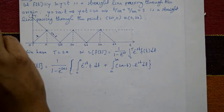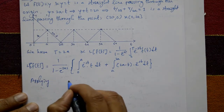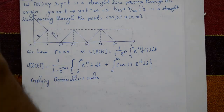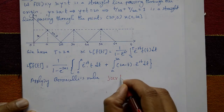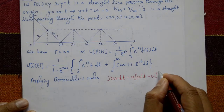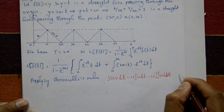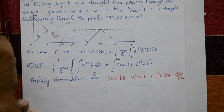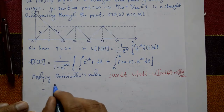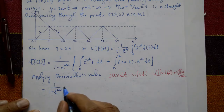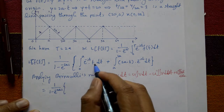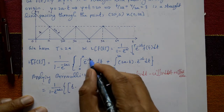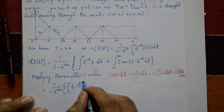Applying Bernoulli's rule (integration by parts): ∫uv dt = u∫v dt − u'∫∫v dt dt + u''∫∫∫v dt dt dt ± ... and so on. Taking the polynomial part to differentiate and the exponential part to integrate, the first integral gives: t · e^(−st)/(−s) − 1 · e^(−st)/(s²), evaluated from 0 to a.